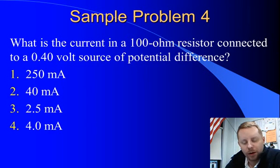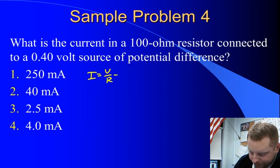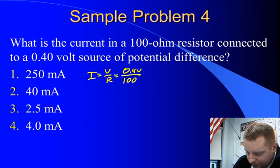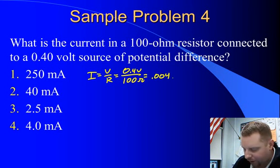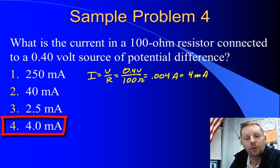Another sample problem. What is the current in a 100 ohm resistor connected to a 0.4 volt source of potential difference? If we're looking for current flow, i equals v over r or 0.4 volts over 100 ohms is going to be 0.004 amps or 4 milliamps. Answer 4.